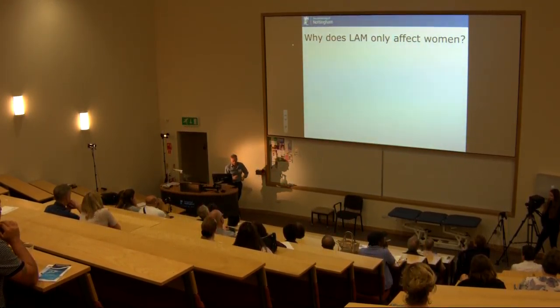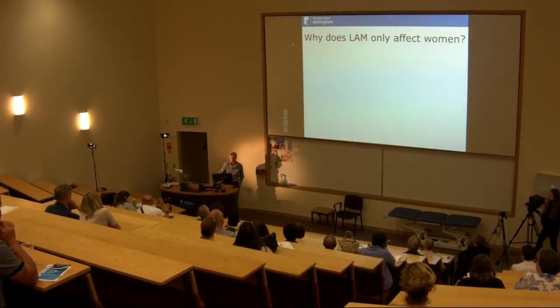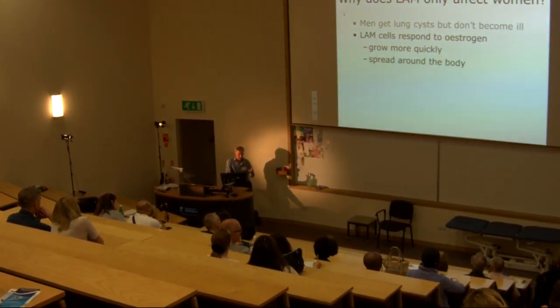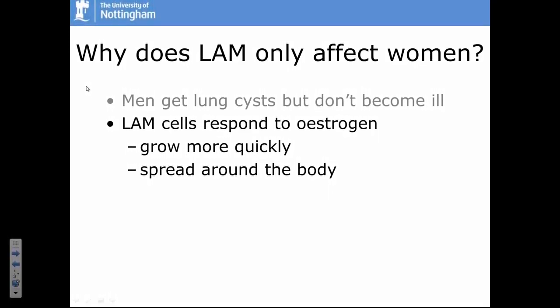LAM is one of the most female-restricted diseases — much more so than, say, breast cancer, which affects men in one in 100 cases. It's very unusual for men to get LAM, and we think that's because of exposure to the female hormone estrogen. Men with tuberous sclerosis can get lung cysts, but they don't seem to progress the same way. We think the cells that cause LAM respond to estrogen — if you grow these cells in the lab and add estrogen, they grow more quickly and spread around the body faster. So we think that estrogen is bad for LAM.